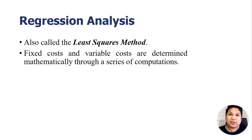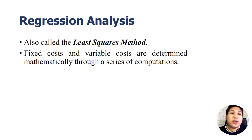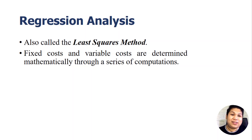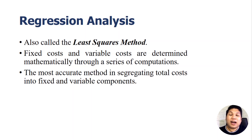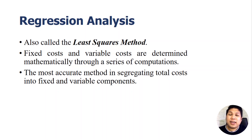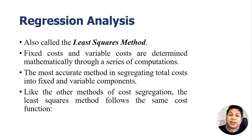There are other data points that are ignored in those two methods. In regression analysis, we are going to use them all — we will not ignore any values of x and y. Hence, there will be a series of computations in this analysis. Among the three methods used in cost accounting for segregating mixed costs, regression analysis is by far the most accurate method in segregating total costs into fixed and variable components.